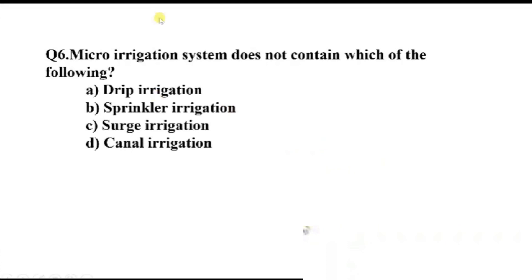Question number 6. Micro irrigation system does not contain which of the following? Option A, trip irrigation. B, springer irrigation. C, surge irrigation. D, canal irrigation. The right answer, Option D, canal irrigation.